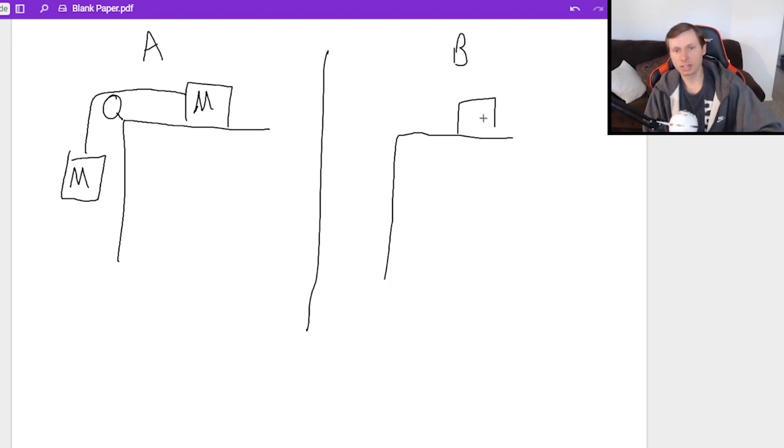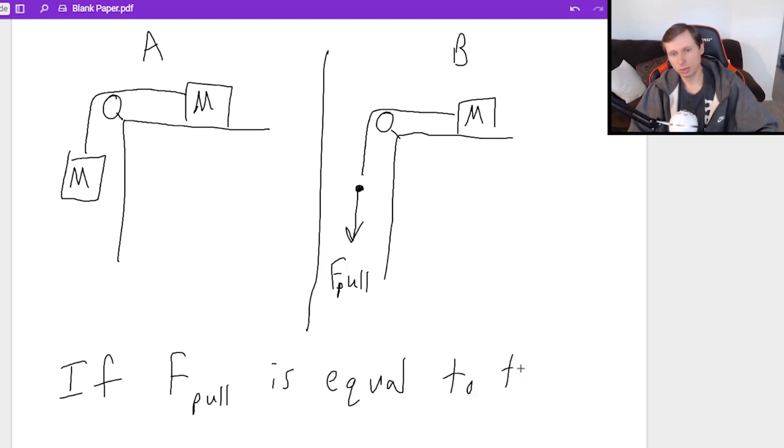Scenario B also has a block tied to a pulley. But the difference is this time I don't have a block on the other end. I just have some pulling force. I'll call it F-pull.